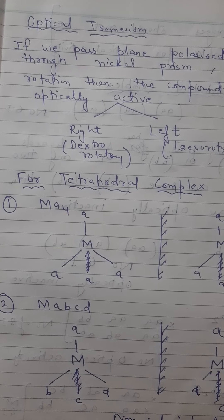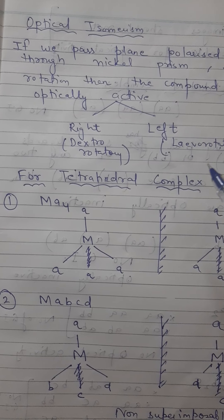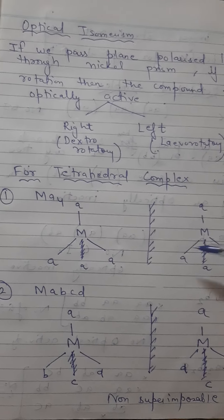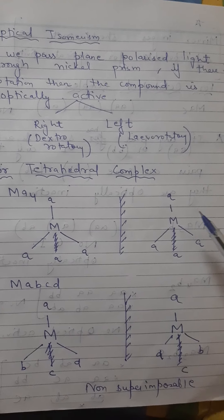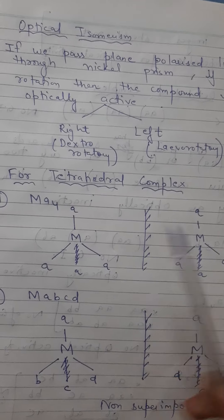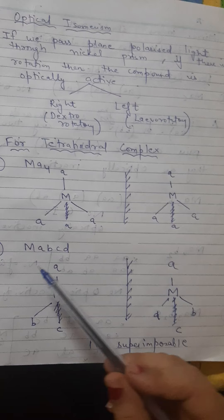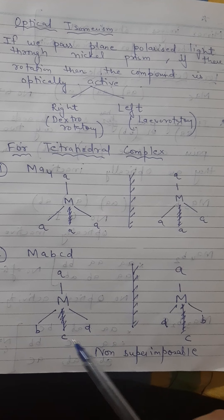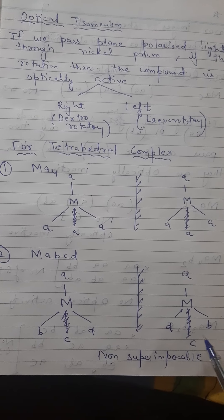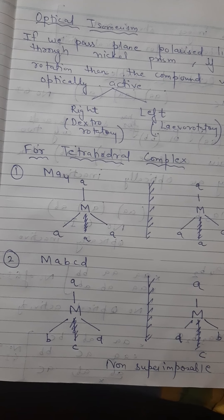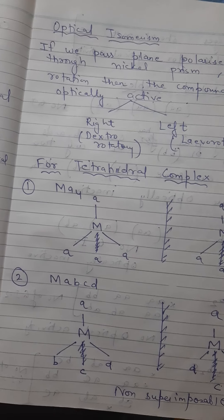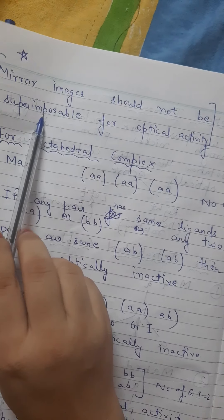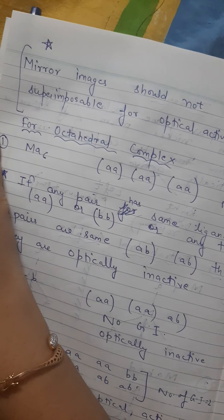For tetrahedral complex, if we talk about MA4, MA3B, MA2B2, MABCD - for MABCD, all four ligands are different. So they are non-superimposable. Now the trick is how to find out if optical isomers are possible or not. Mirror images should not be superimposable for optical activity. If you want to see that there is optical activity or not, the mirror images should not be superimposable.